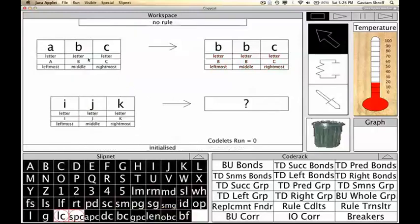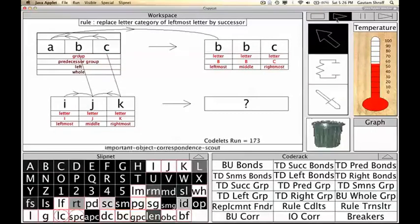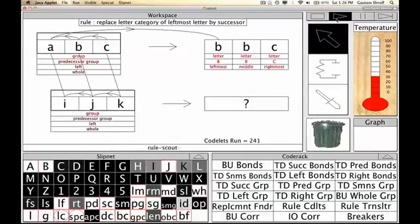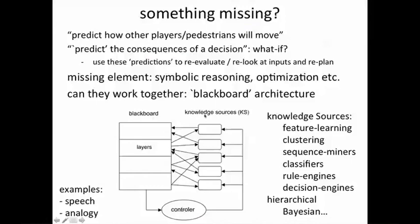Let's try it again. This time we give it the problem: ABC goes to BBC, and see what it comes up with. The blackboard architecture is reasoning — different types of rules are being applied in a hierarchy, and each rule is affecting what to look at next. It comes up with JJK, replacing the category of the leftmost letter by its successor. Blackboard systems are extremely powerful and they form a way of marrying the bottom-up data-driven reasoning with top-down symbolic reasoning, allowing both to influence each other, just as Bayesian networks and hierarchical temporal memory also include this element of top-down and bottom-up reasoning working together.